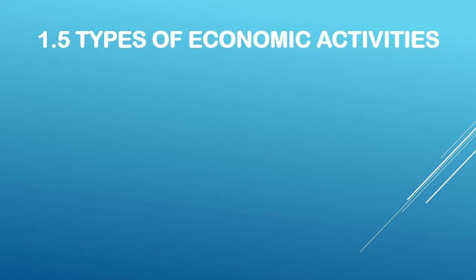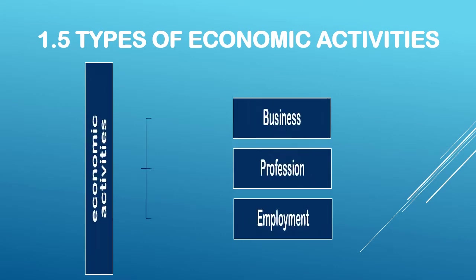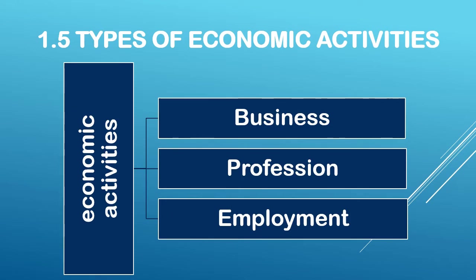Now let us look into the types of economic activities. Following the book, we learned about human activities, their classification into economic and non-economic, the meaning and characteristics of economic activities, and non-economic activities. Now we return to the types of economic activities — these are classified into three types: business, profession, and employment. Even though all three are economic activities done to earn money, they differ, as we will see.